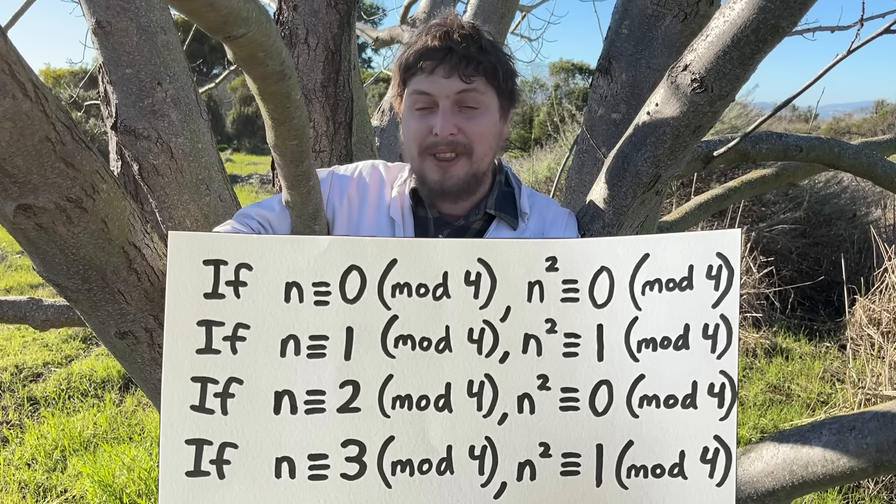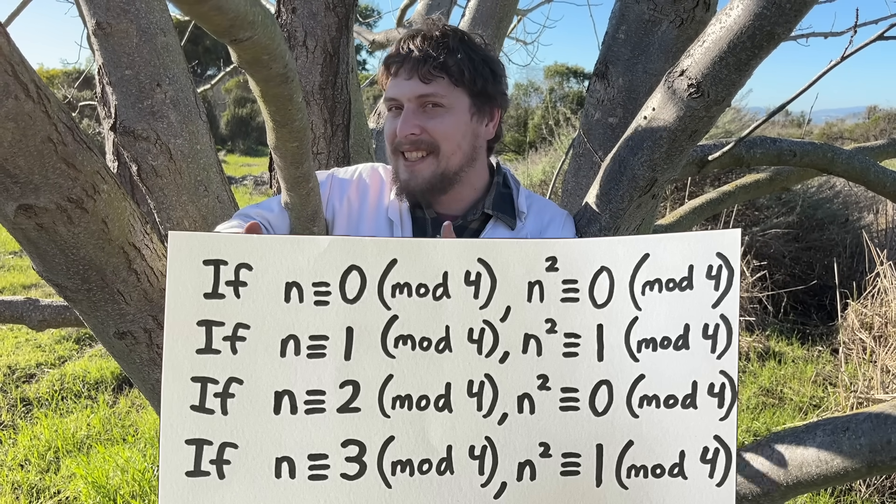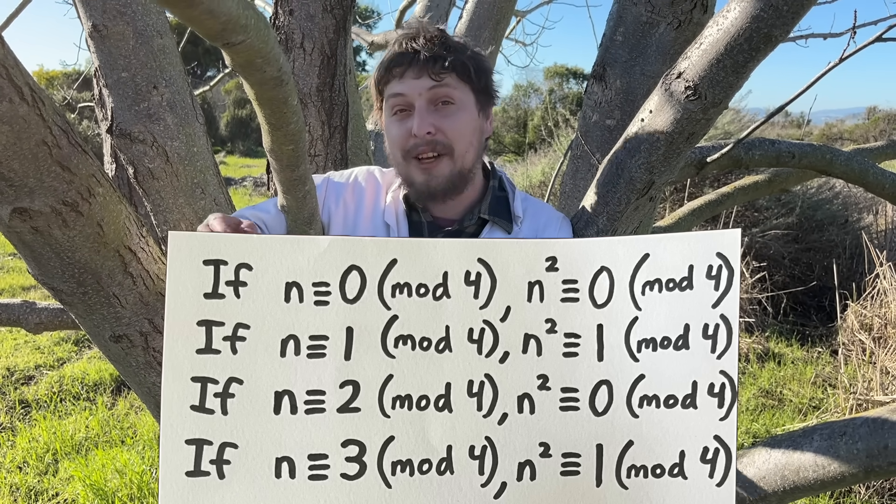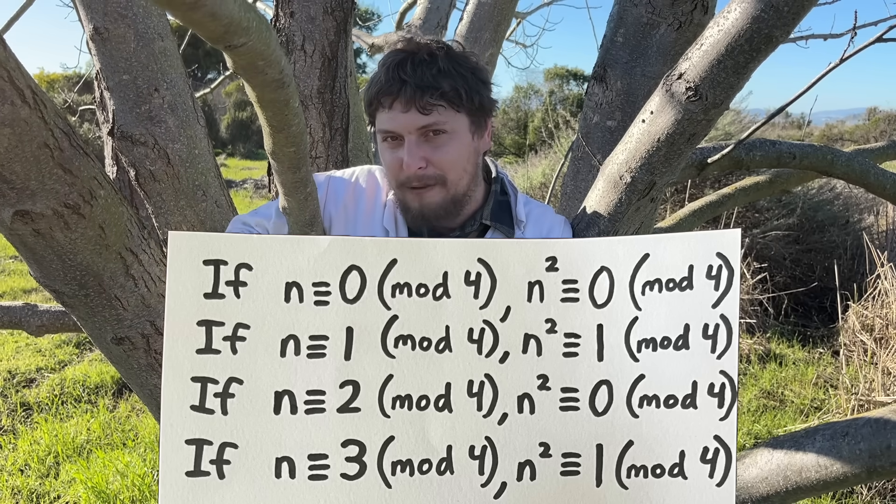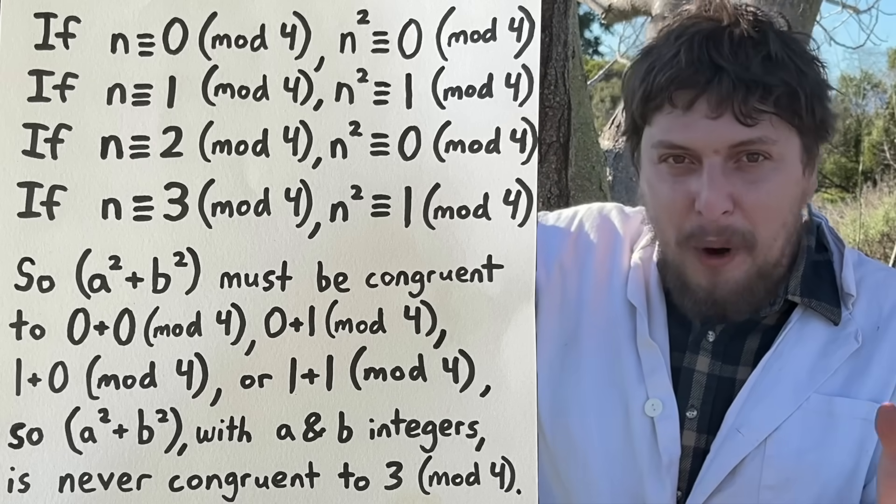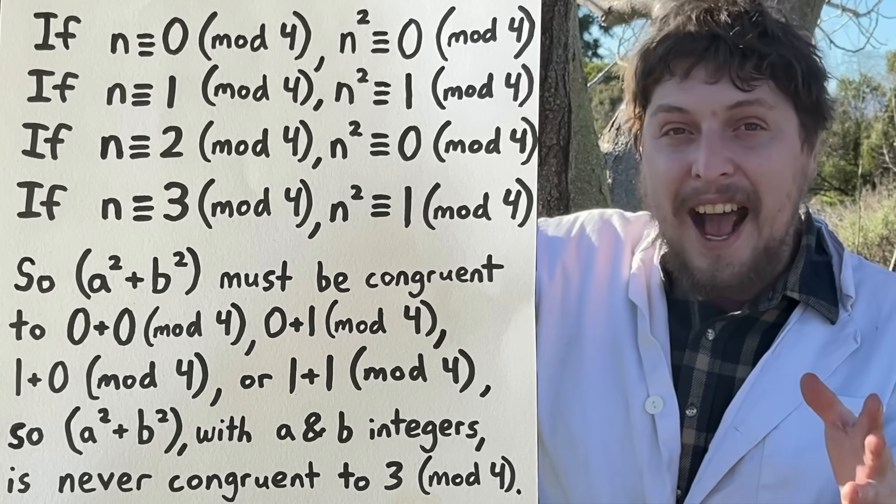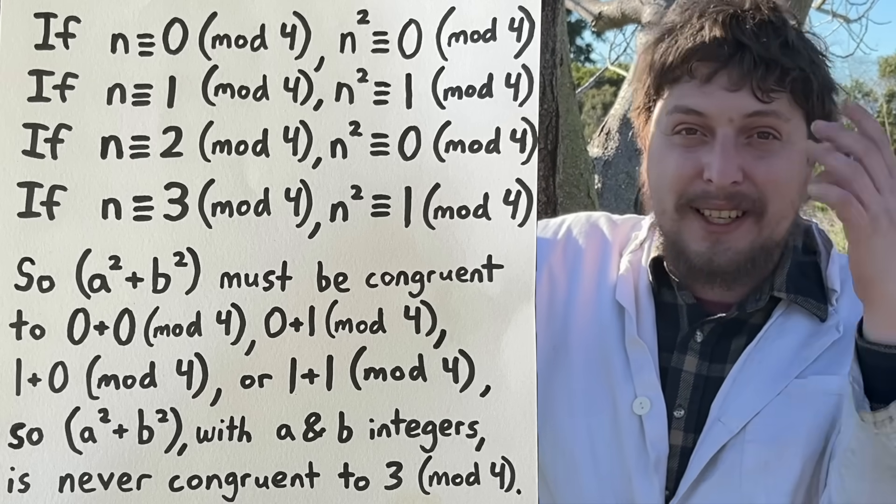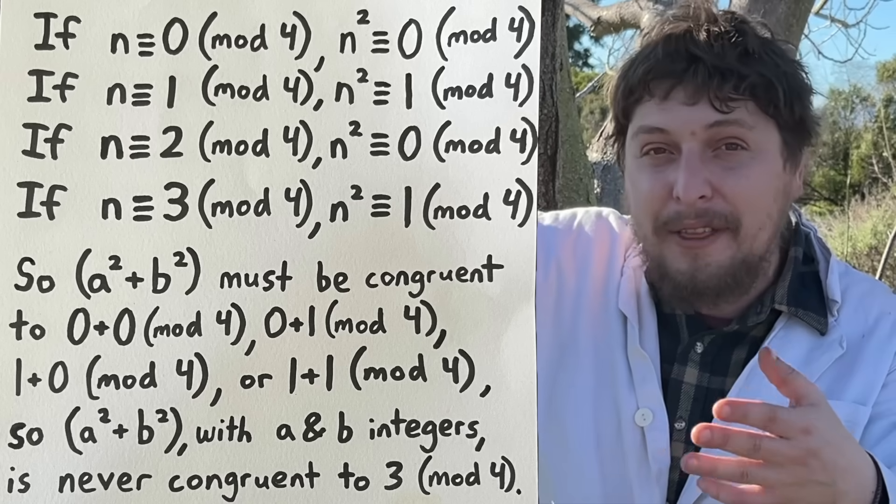And it's true that any square number is either a multiple of four or exactly one more than a multiple of four. Now, if we add up two possible squares, that's going to be adding either something congruent to zero in that mod with another zero, or a zero and a one,